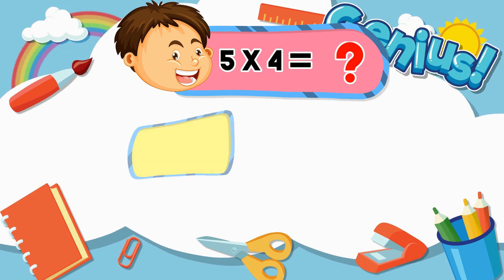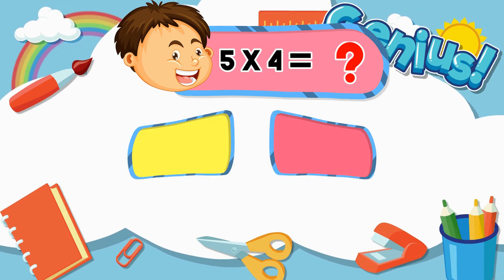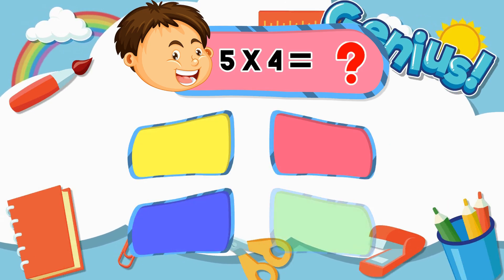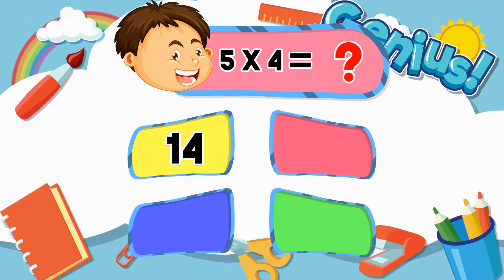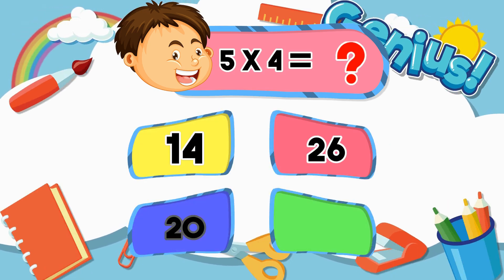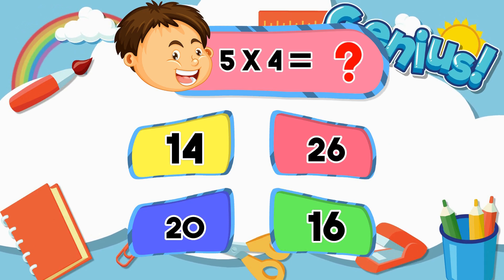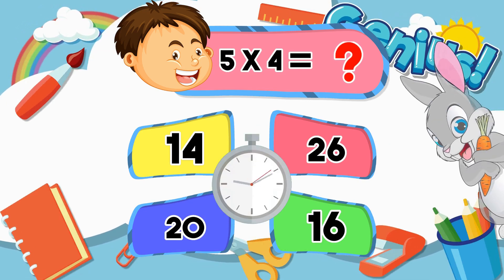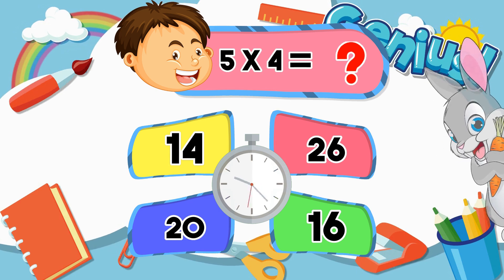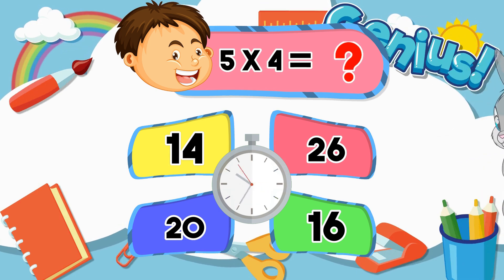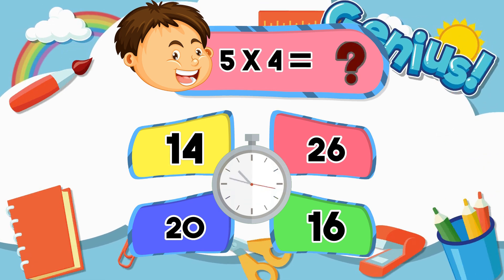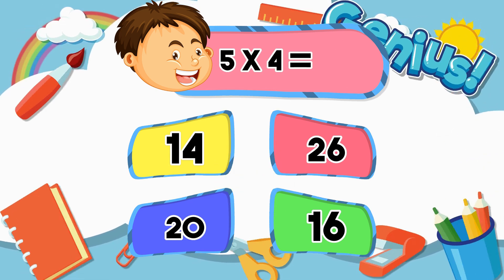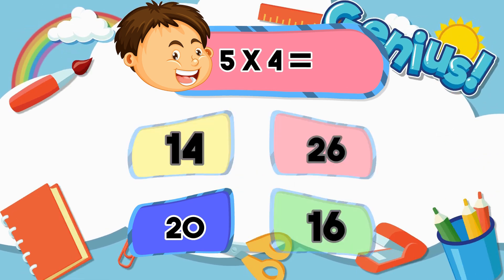What is 5 times 4? 14, 20, 20, 16. The correct answer is 20.